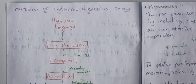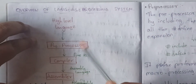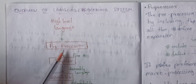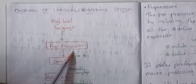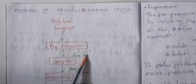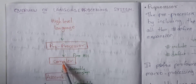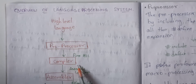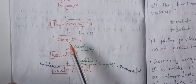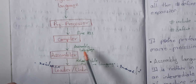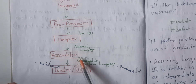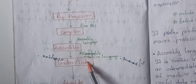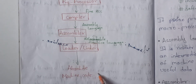Now we will see the diagrammatic representation of a language processing system with a step-by-step explanation. First is the high-level language (HLL), which is used as input to a pre-processor. After pre-processing, the pure HLL is passed to a compiler. The compiler output goes to an assembler, which can convert to relocatable machine language, and then a loader or linker converts it to absolute machine code.